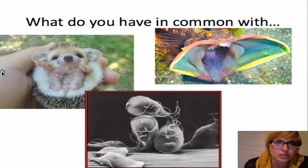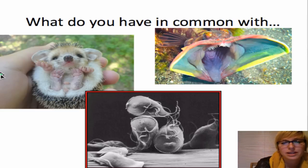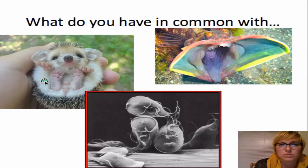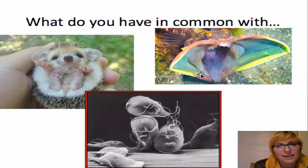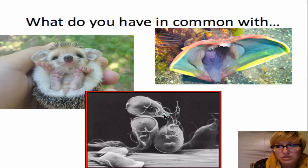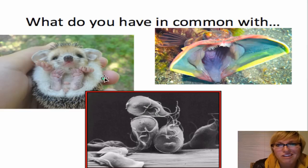Hello wonderful bio students and welcome to our video on cell organelles. This is the first of two. What I first want to ask you is what do you have in common with these three things? This is a little cute amazing baby porcupine, a really cute cuddly looking fish — my favorite fish called the sarcastic fringe head — and also quite beautiful but quite disruptive to your gastrointestinal tract: a protist called Giardia. So what do you have in common with all three of these things?